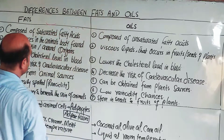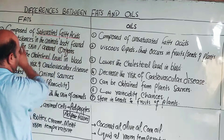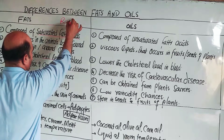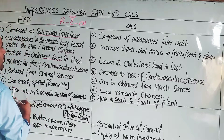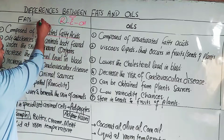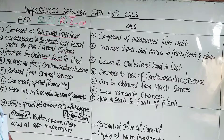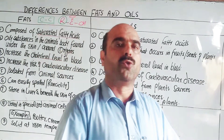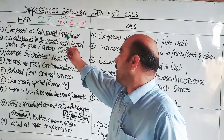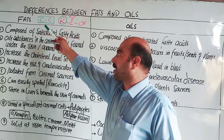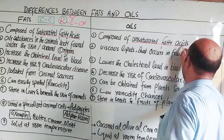First difference: fats are composed of saturated fatty acids. Fatty acids are carboxylic acids with the general formula R-COOH, where R is the alkyl or hydrocarbon portion. In saturated fatty acids, the R portion contains all carbon-to-carbon single bonds — these are saturated hydrocarbons. Oils, on the other hand, are composed of unsaturated fatty acid molecules — carboxylic acids where the hydrocarbon portion contains one or more carbon-to-carbon double bonds.